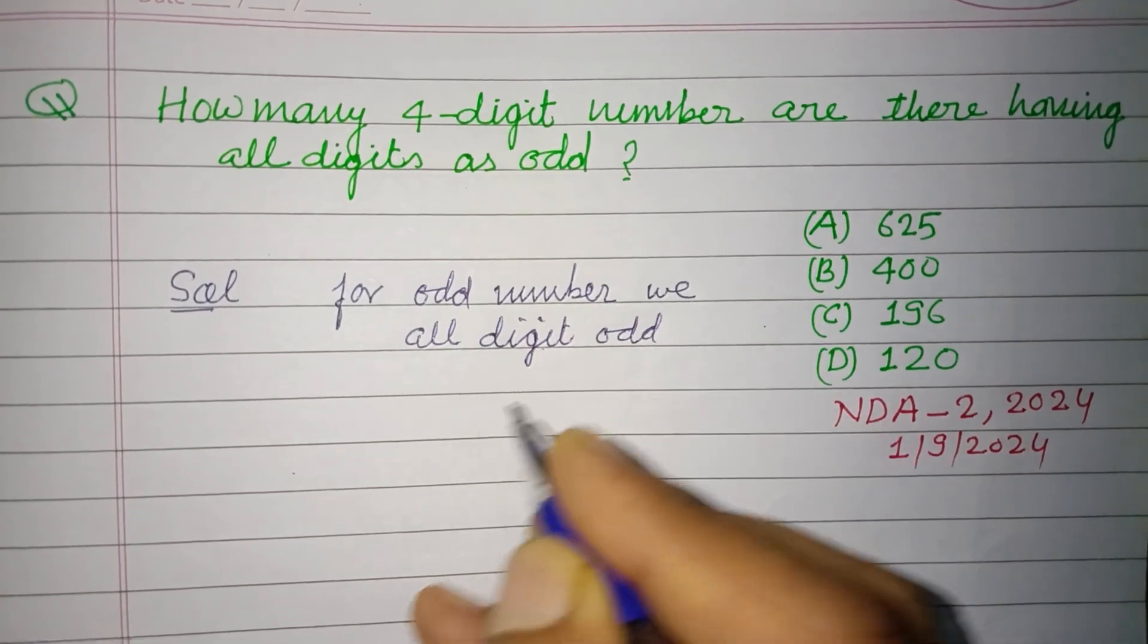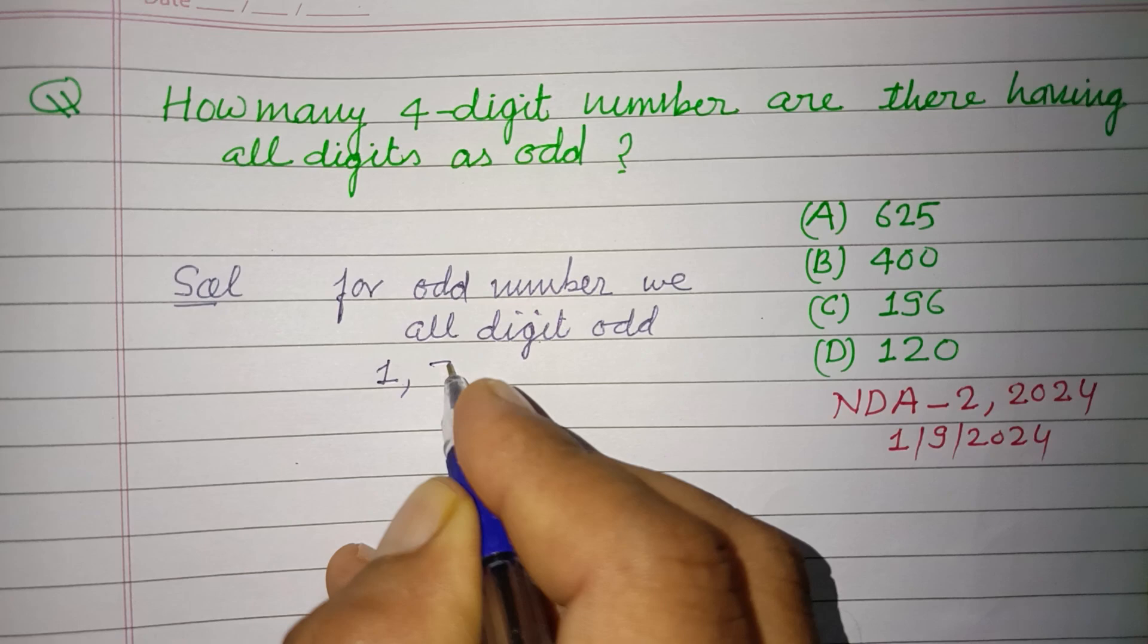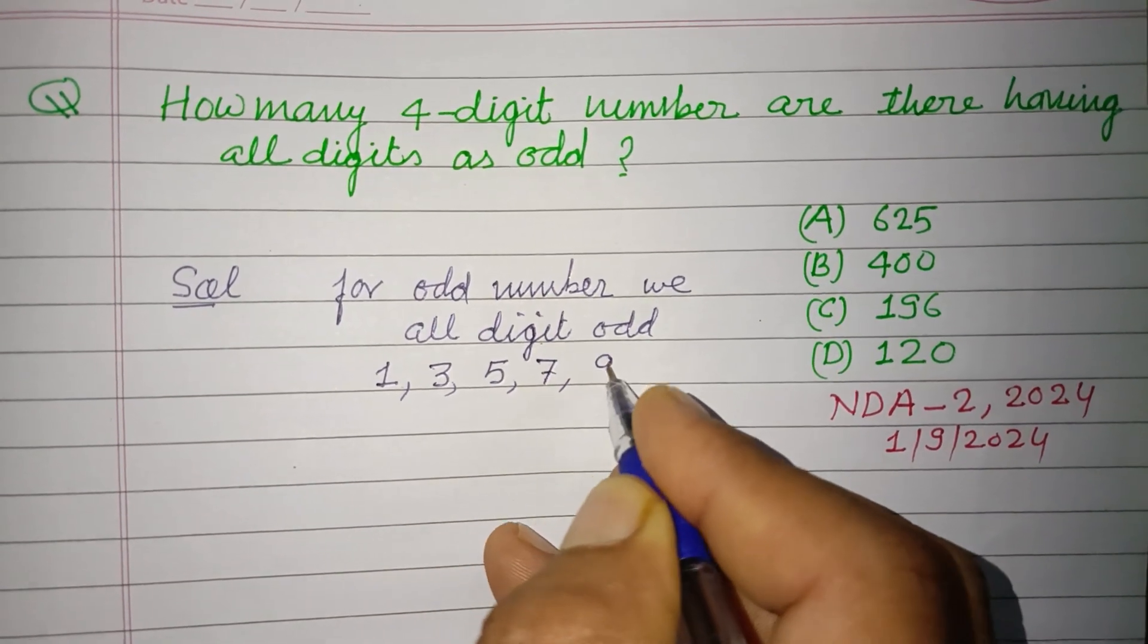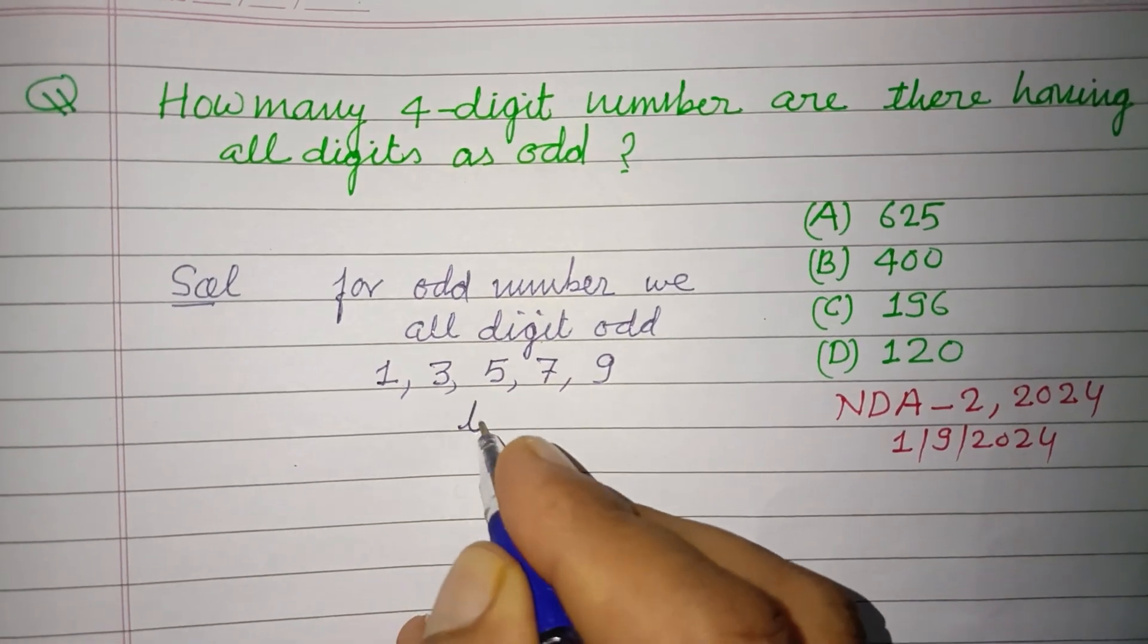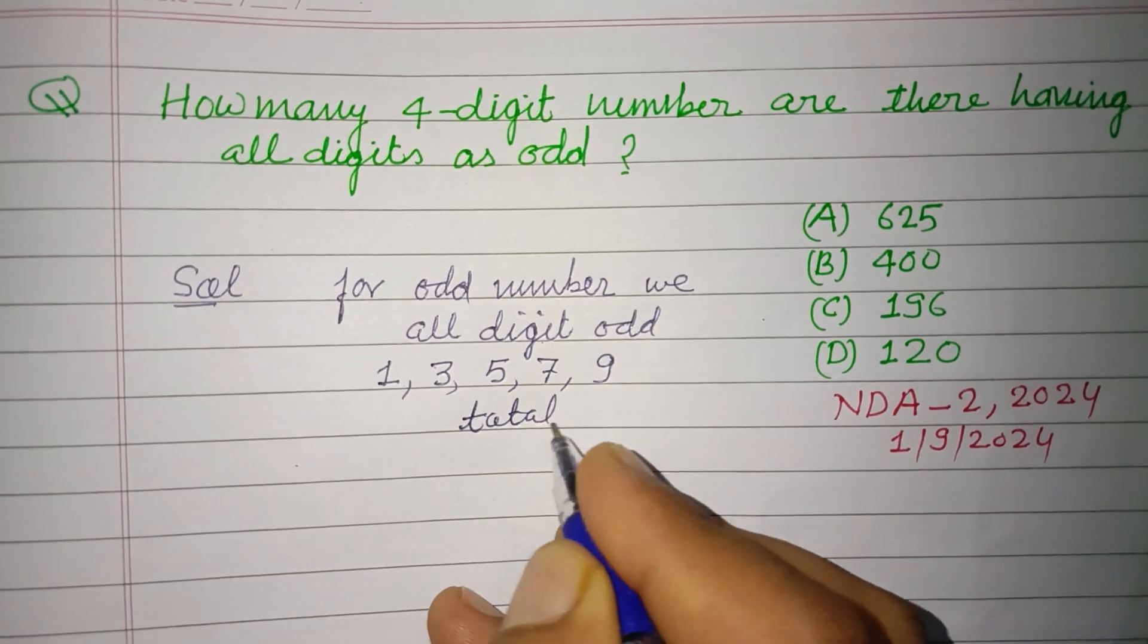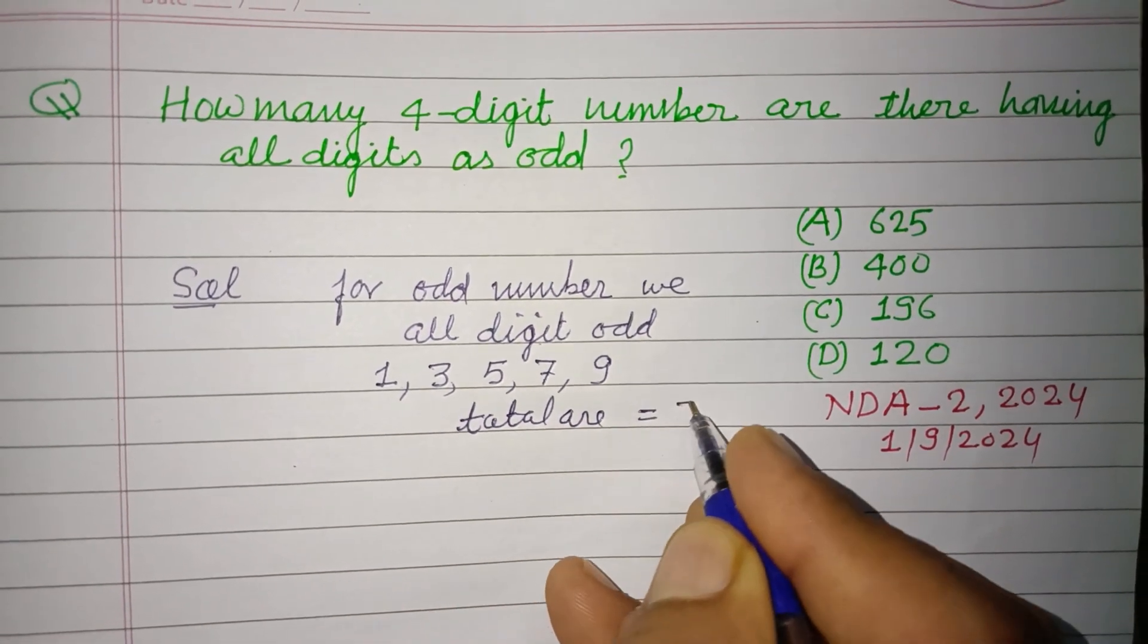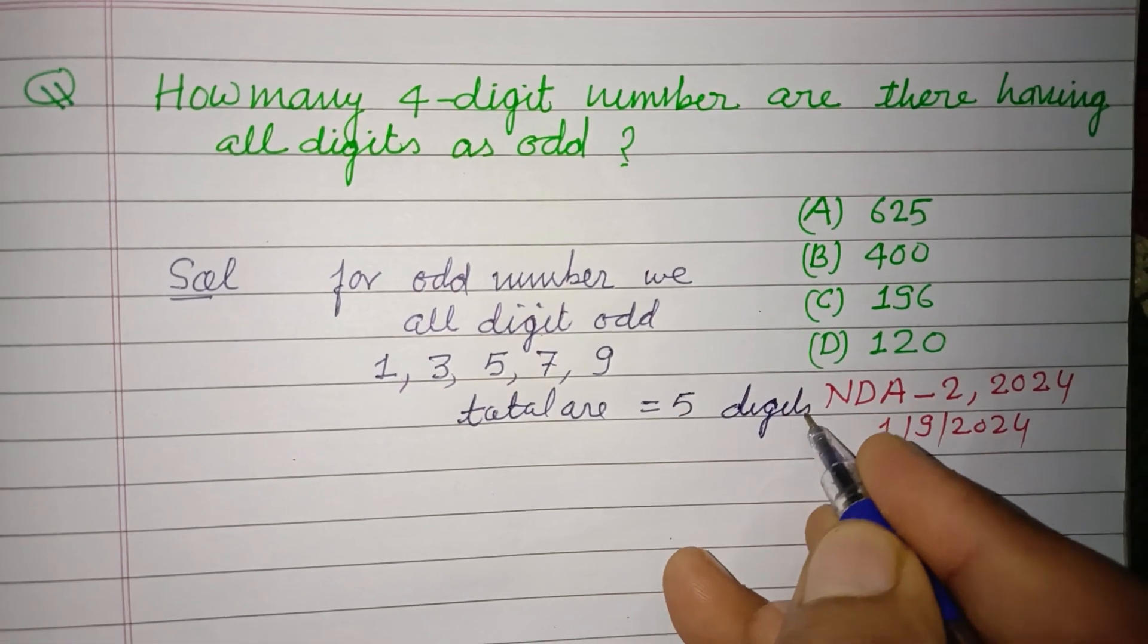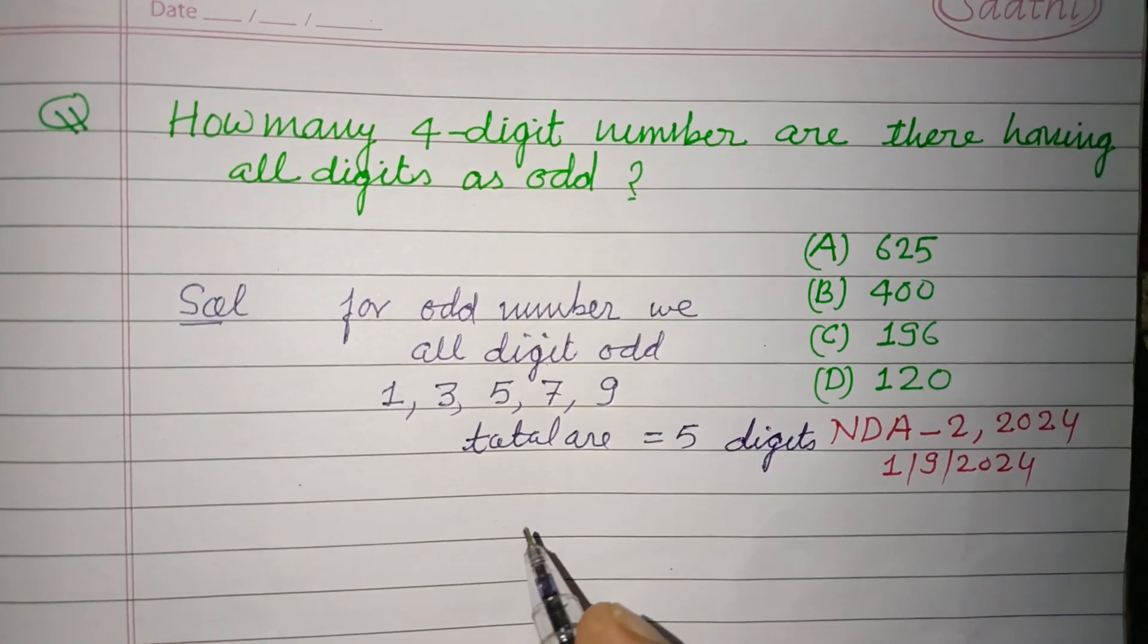And odd digits are 1, 3, 5, 7, 9. Total are 5 digits.